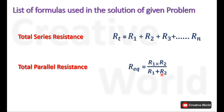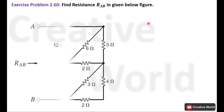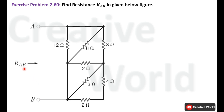Now let's move towards the problem. Exercise problem number 2.60: find resistance RAB in the given figure. This is the circuit diagram of the given problem. We have to find the resistance between these two points labeled as RAB. So without wasting time, let's proceed towards the solution.